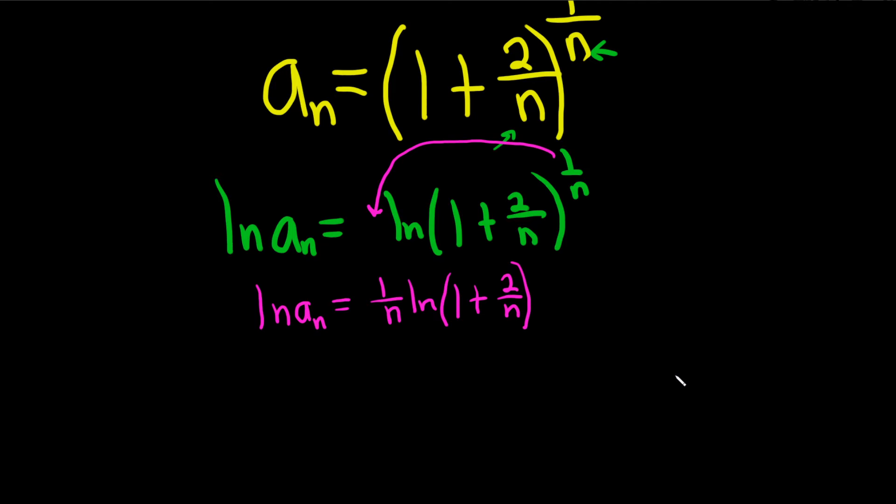And now we'll take the limit. Let me switch colors here. This is the limit as n approaches infinity of the natural log of a sub n. I'll throw a parentheses in there, make it look a little bit better. And this is the limit as n approaches infinity of 1 over n times the natural log of 1 plus 2 over n. I'm going to make a small adjustment here in how this is written.